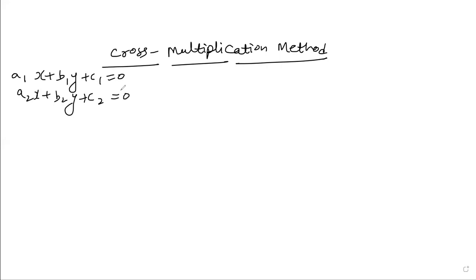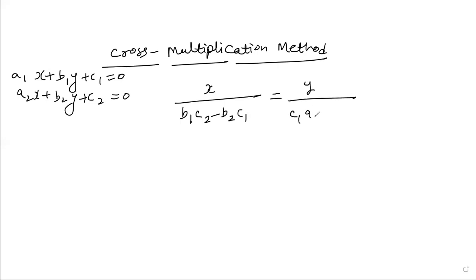The formula for cross multiplication is: x ÷ (b1c2 − b2c1) = y ÷ (c1a2 − c2a1) = 1 ÷ (a1b2 − a2b1). Let me show you a trick to remember this formula.